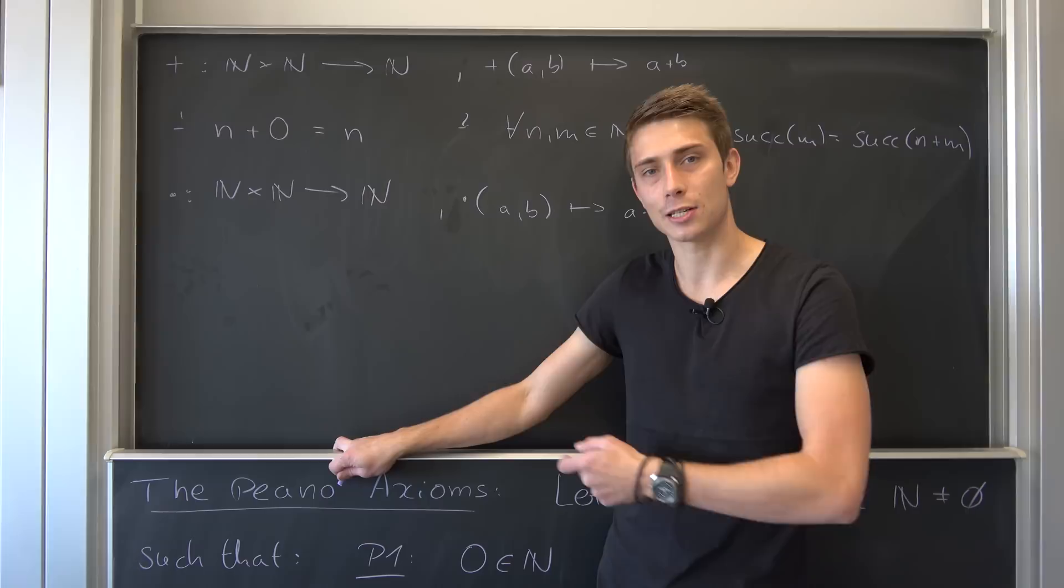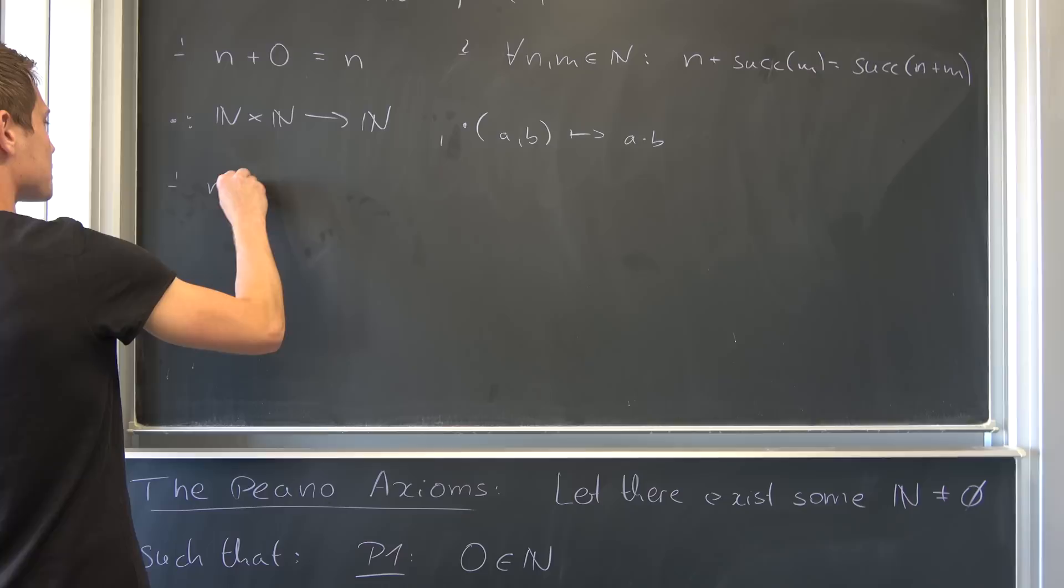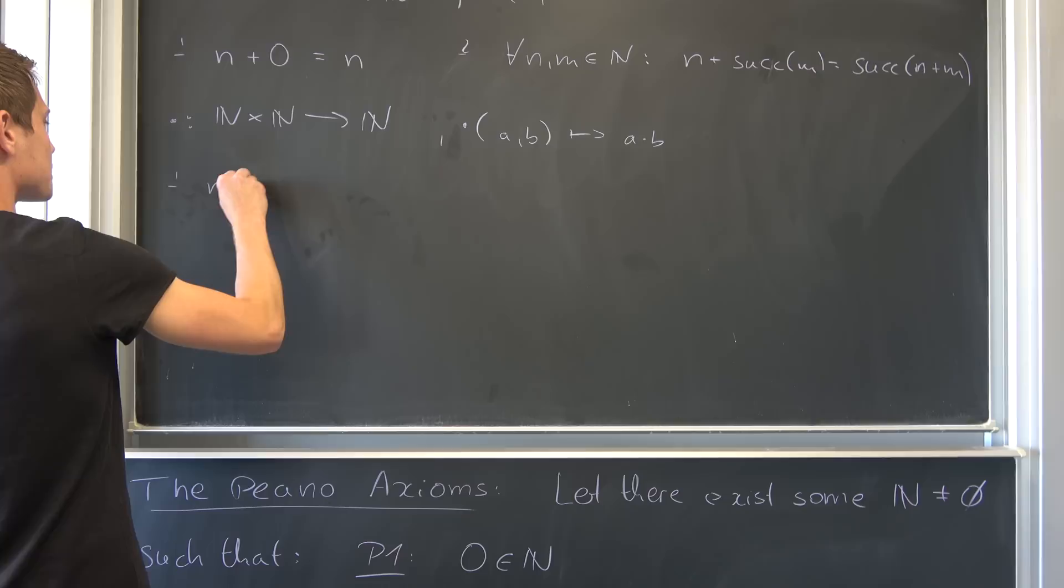And just like with the addition, it underlies two little rules. For all N and M element of natural numbers, what could they be? Well, they have to include zero somehow once again, at least one of those numbers. What about N times zero?